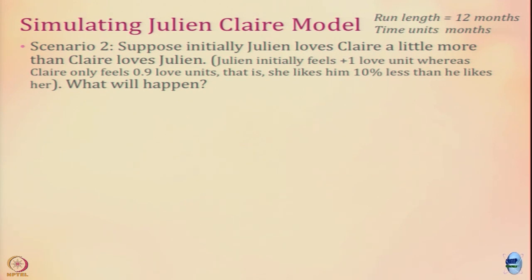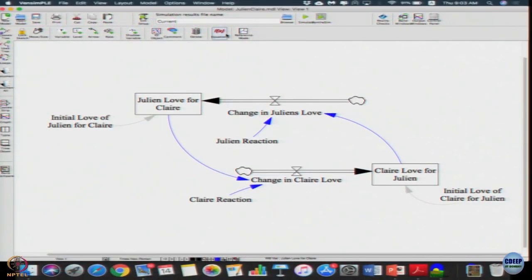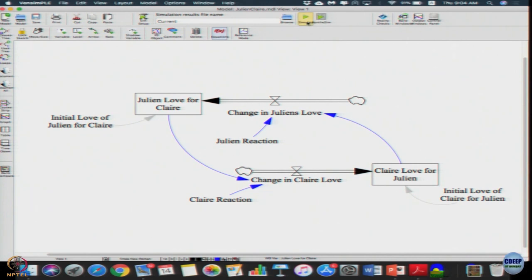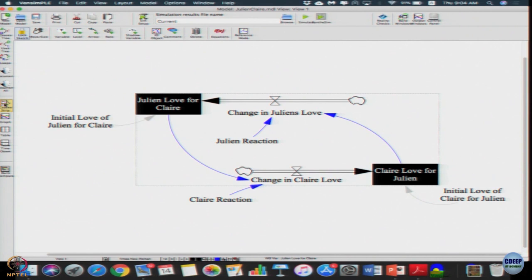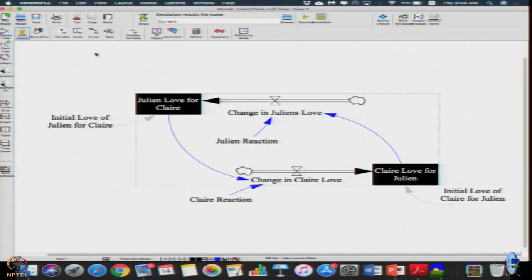Suppose initially Julian loves Claire a little more than Claire loves Julian. Both love each other, but assume Julian initially feels plus 1 love unit where Claire only feels 0.9 love units — she likes him 10 percent less. We see the same exponential behavior overall. But we need to zoom in to periods 0 through 2. With initial love for Julian set to 1 and initial love of Claire set to 0.9, and both reactions at minus 1, we simulate.